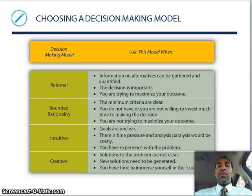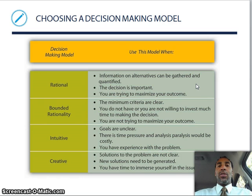Choosing a decision-making model. The decision-making model is on the left side, and you want to use this model based on the conditions on the right side. The rational model: you want to use it when information on alternatives can be gathered and quantified — things are quantifiable as opposed to qualitative. Use the rational decision model when the decision is important and you are trying to maximize your outcome.